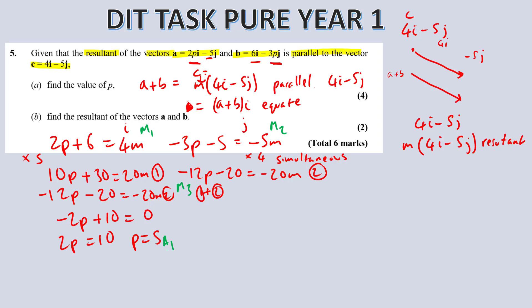Now it says b, find the resultant of the vectors a and b. So what do you think you have to do? Well now, for part b, we know p equals 5. So a is going to be 2 times 5, so that's 10i minus 5j. And b is going to equal 6i minus 15j. The resultant is adding them together. So a plus b equals 16i minus 20j. And that's your method 1 and answer 1.